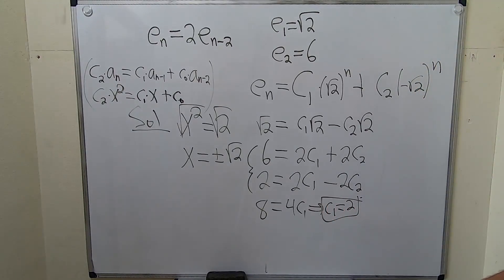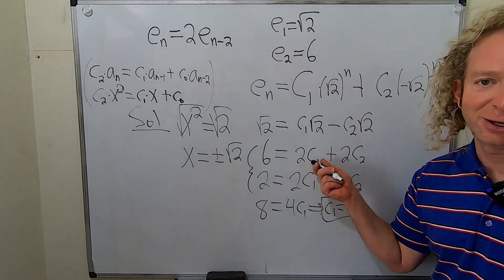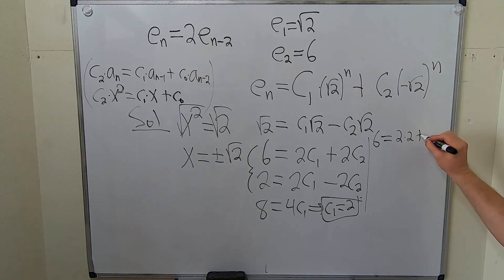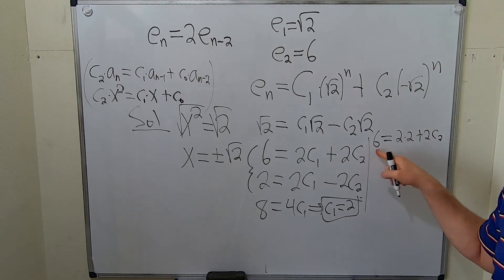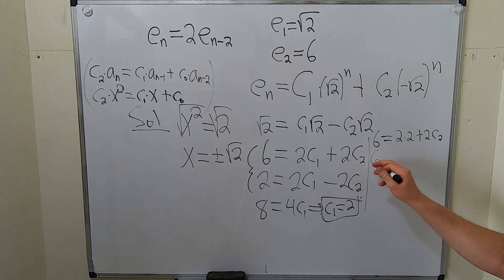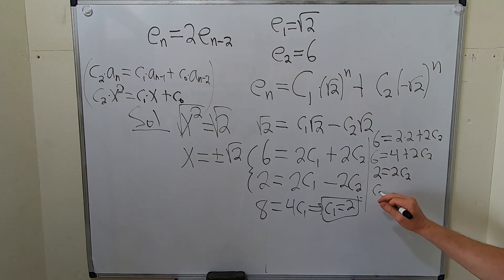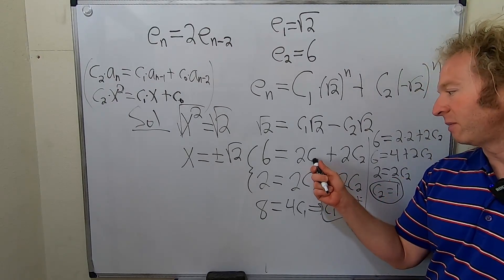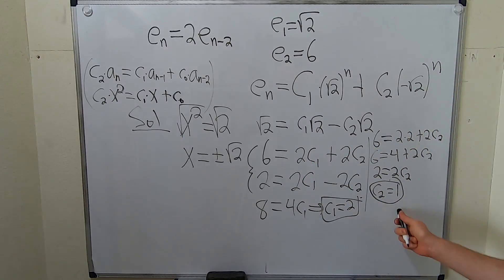To find c2, we just plug it back in here maybe. So let's do that. So we have 6 equals 2 times 2 because c1 is 2 plus 2c2. So 6 is equal to 4 plus 2c2. So 6 equals 4 plus 2c2. So subtract 4. So you get 2 equals 2c2. Divide by 2. You get c2 equals 1. Did that kind of quick. Basically, we just took the c1 and plugged it back in here and solved for c2.